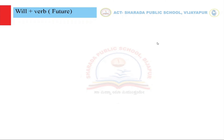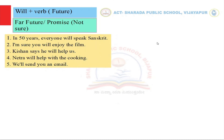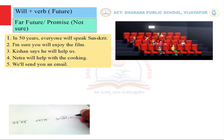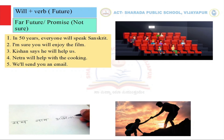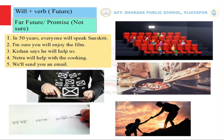We use 'will' plus verb when talking about the far future. For example: 'In 50 years, everyone will speak Sanskrit.' We also use 'will' when we are not so sure about something — it's a prediction without much evidence. Another example: 'I am sure you will enjoy the film.' We also use 'will' when making promises: 'Kishan says he will help us.' 'Netra will help with the cooking.' 'We will send you an email.'